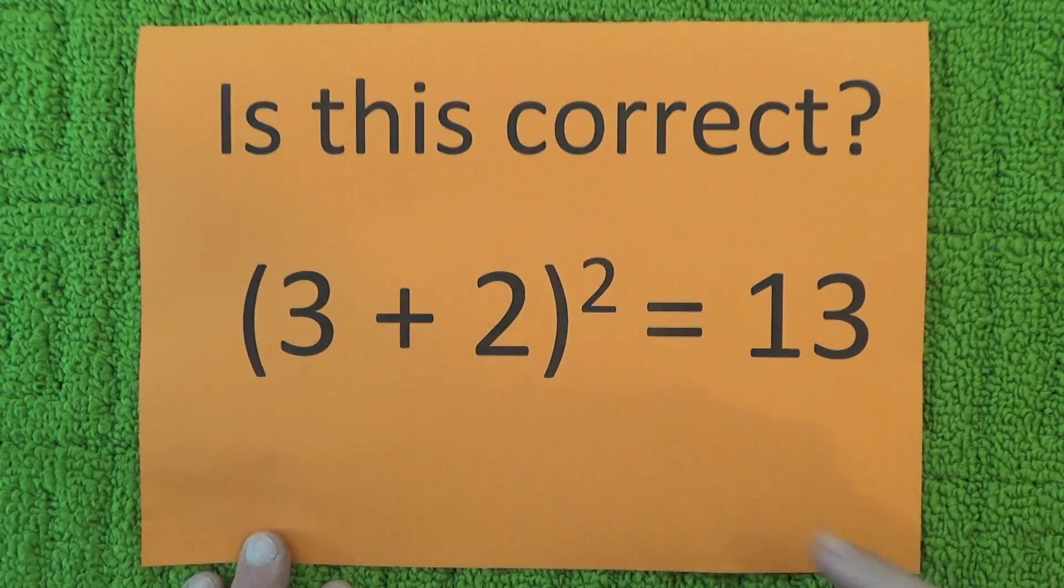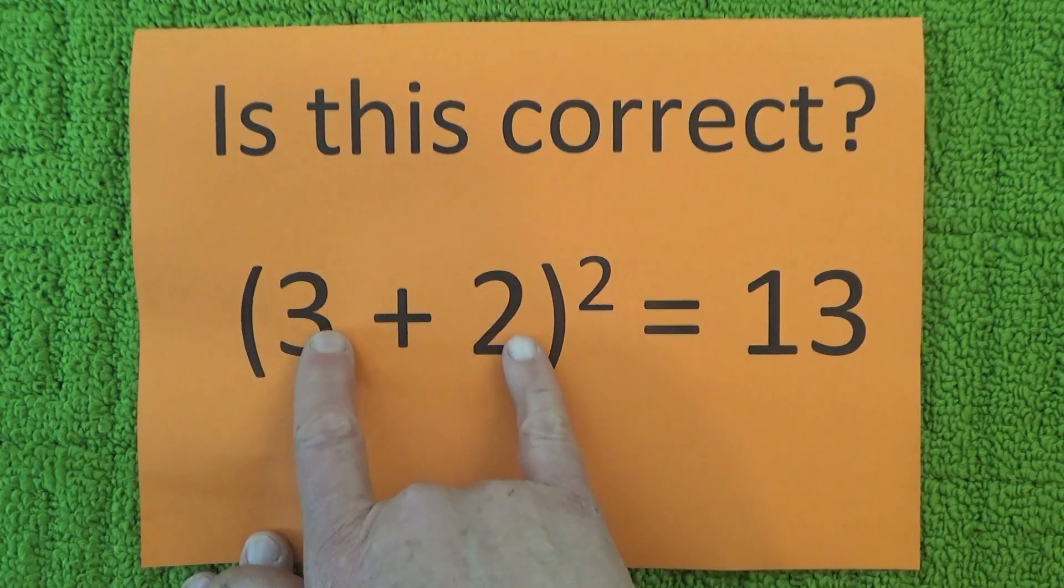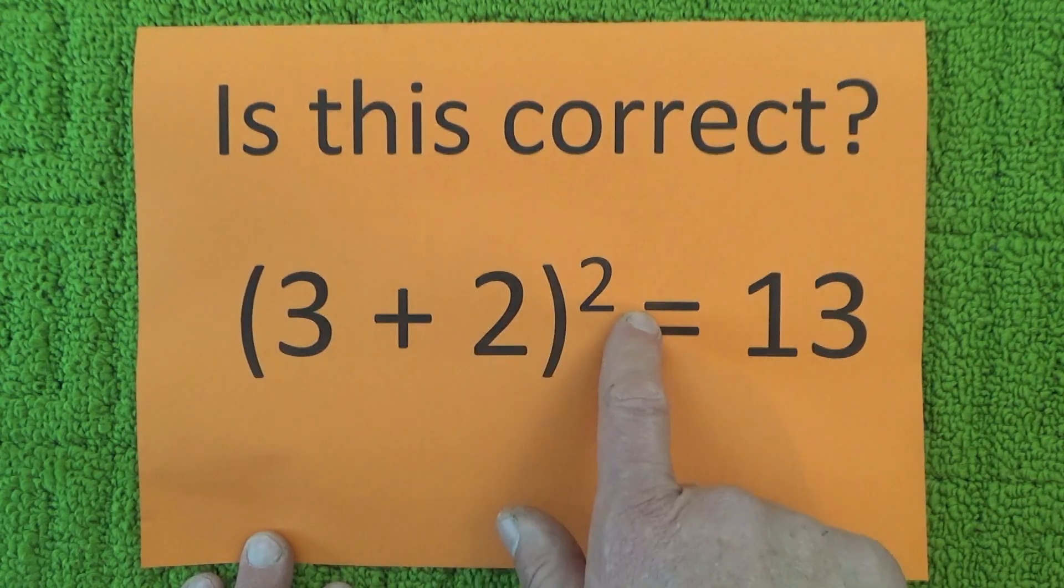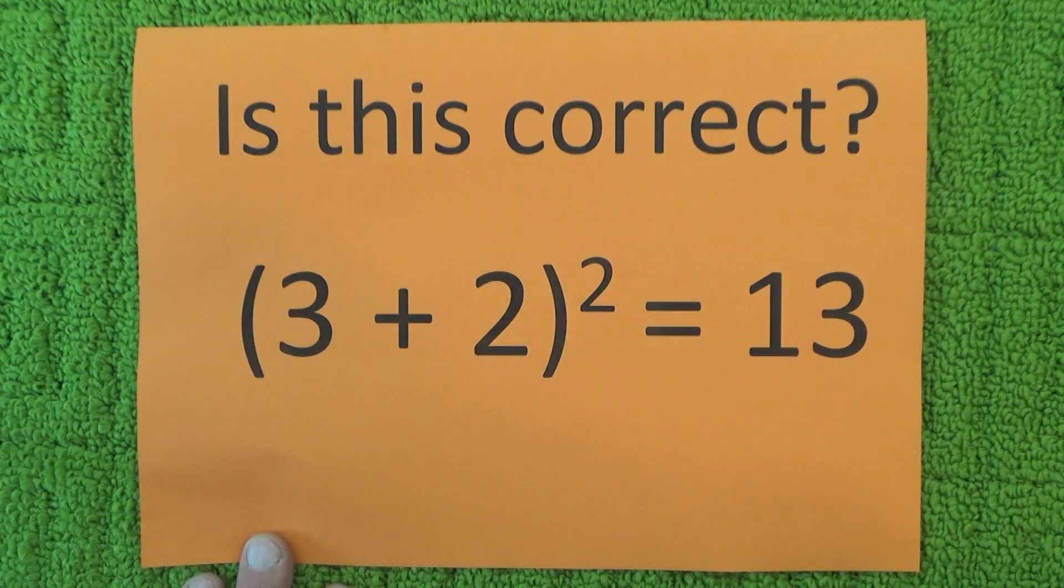But it's not correct because you've got to do the 3 + 2 first. 3 + 2 is 5, and 5² is 25.